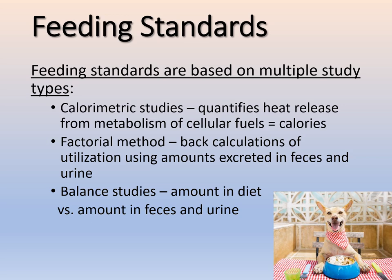Two other similar methods are also used. The factorial method back-calculates what the utilization of the animal must have been by looking at the excreted amounts in feces and urine. A balance study looks at the amount of diet going in versus the amount in feces and urine coming out — very similar to the factorial method, which just back-calculates utilization. Feeding trials are also done; one organization that does these is AFCO, though other companies and pet food companies themselves can conduct feeding trials as well.